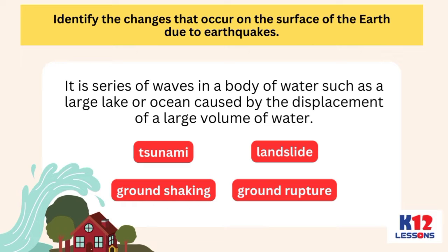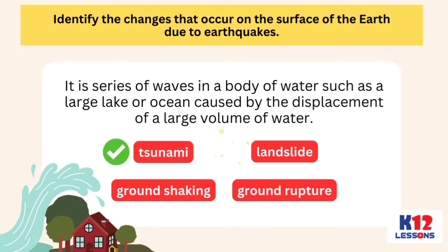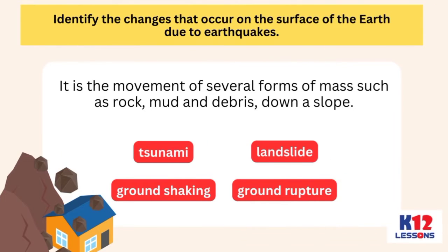It is a series of waves in a body of water such as a large lake or ocean caused by the displacement of a large volume of water. It is the movement of several forms of mass such as rock, mud and debris, down a slope.